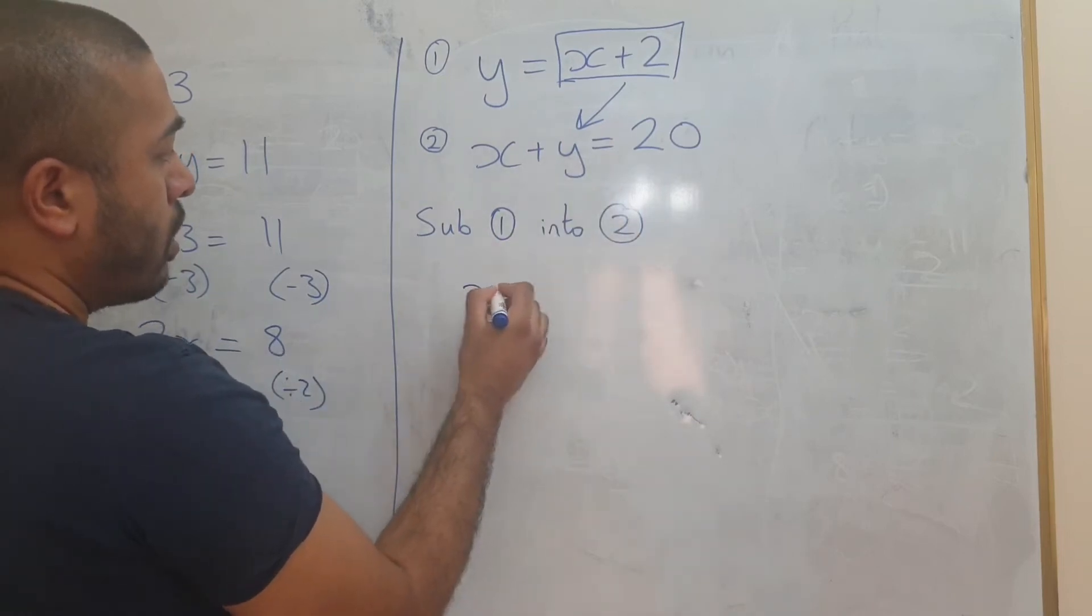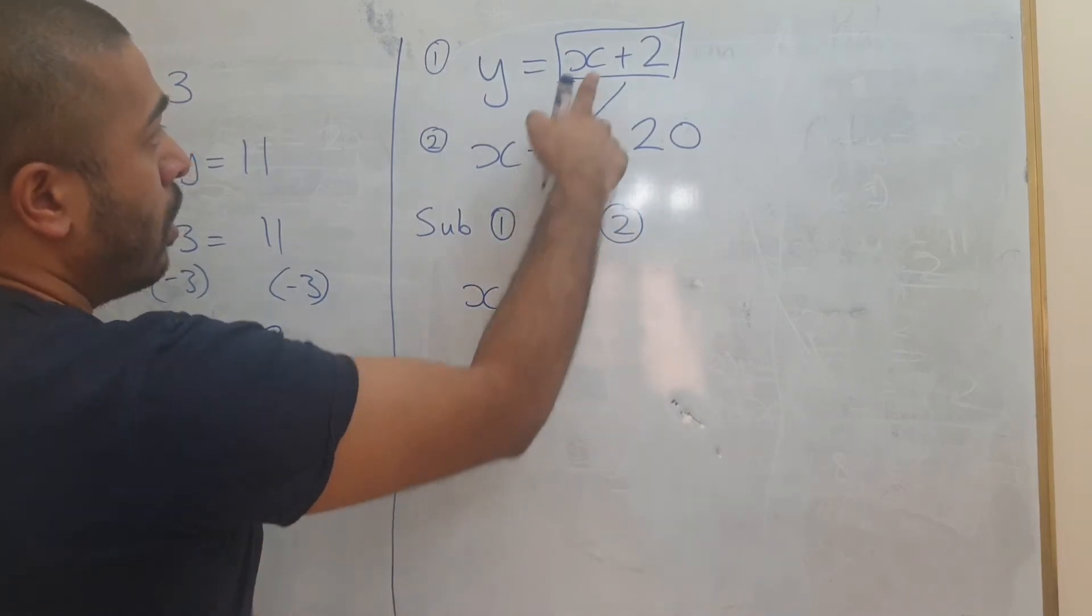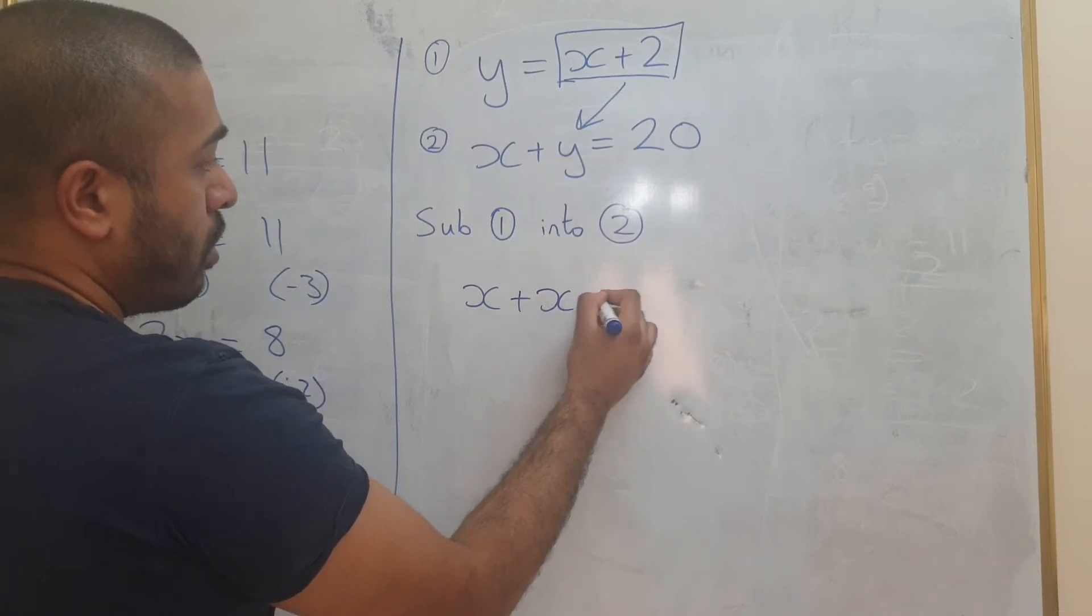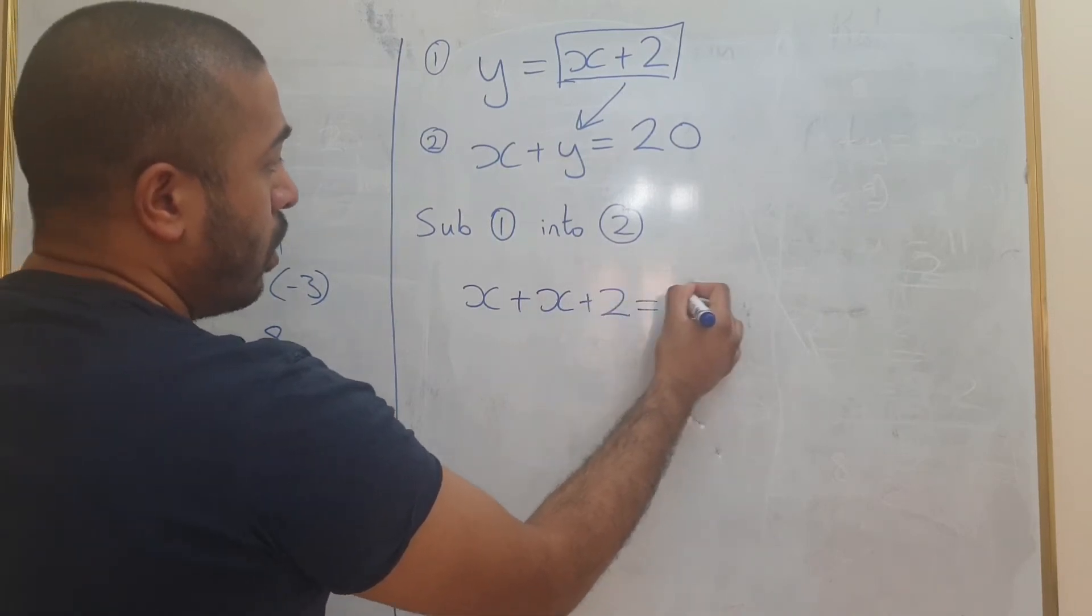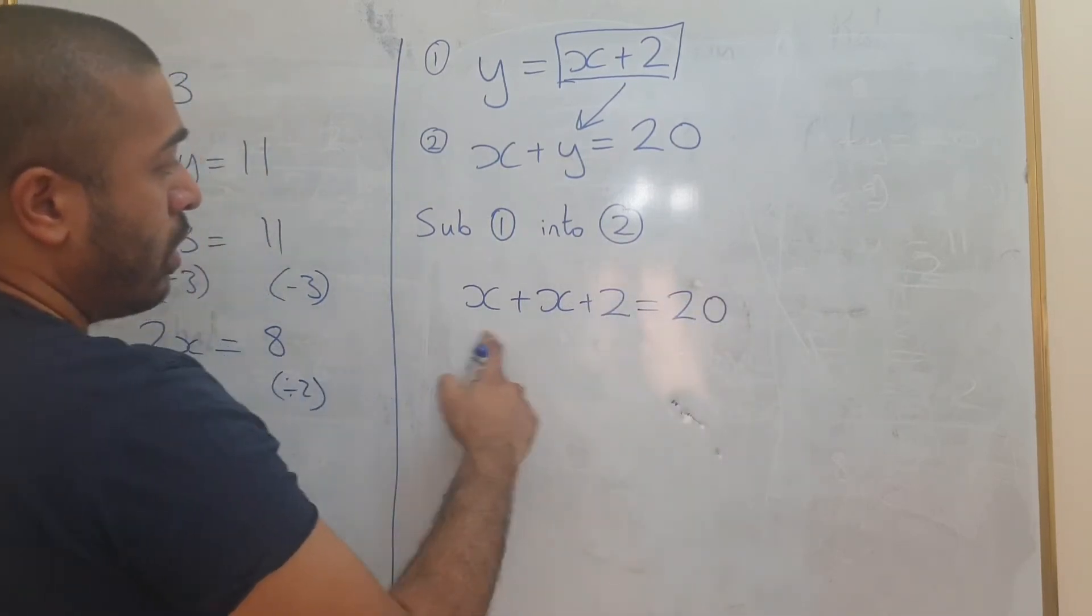So you're going to have x plus x plus 2 equals 20. Then you can simplify this.